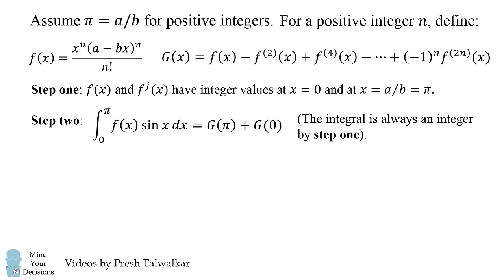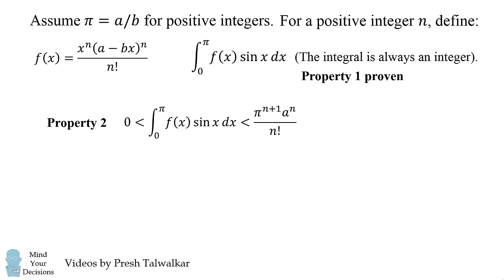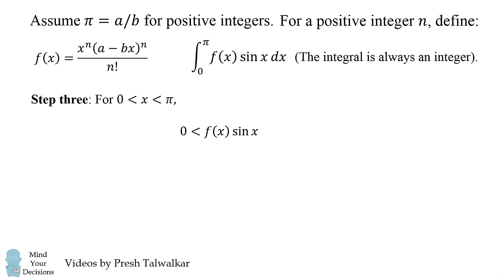We now need to establish property 2 which is this inequality and show that the right hand side goes to 0 as n goes to infinity. We'll work on this one step at a time. First, let's show that 0 is less than f(x) times sin(x) in the interval between 0 and pi.